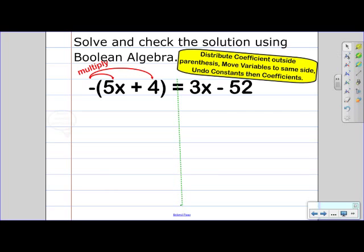So notice that we have a negative symbol. Well, there's really an imaginary one here, so we're actually going to be multiplying negative 1. So if we multiply negative 1 to 5x, we get negative 5x.